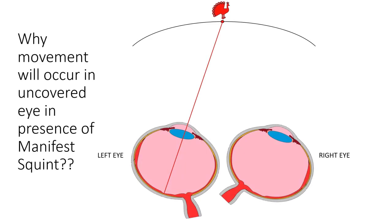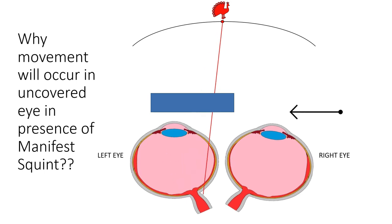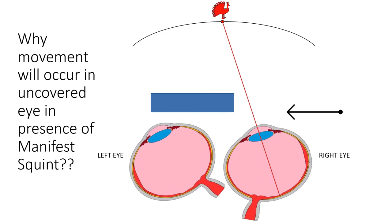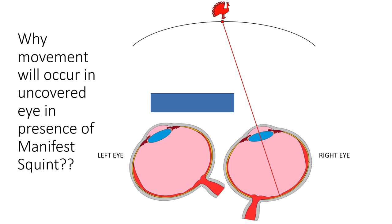Why does movement occur in the uncovered eye in the presence of manifest squint? Because when we cover the fixing eye, the patient cannot see unless the deviated eye moves to take up fixation. So the deviated eye moves to take up fixation, while the originally fixing eye deviates under the cover — but since it is covered, we cannot see that. We only observe movement in the uncovered eye. Moreover, the eye moves in a direction opposite to the direction of the squint. If there was an exodeviation, the eye moves inwards to take up fixation. The direction of squint is opposite to the direction of movement.